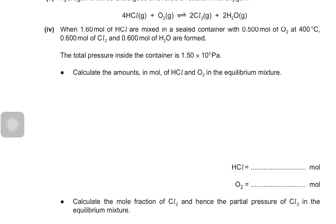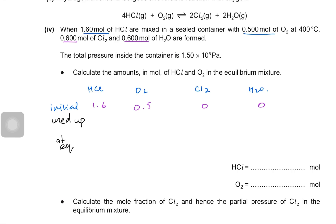Now let's look at a past paper question. Hydrogen chloride undergoes a reversible reaction with oxygen. When 1.60 mol of HCl are mixed in a sealed container with 0.500 mol of oxygen at 400°C, 0.600 mol of chlorine and 0.600 mol of steam are formed at equilibrium. Let's set up the ICE table: initial HCl = 1.60, O₂ = 0.500, and zero products.